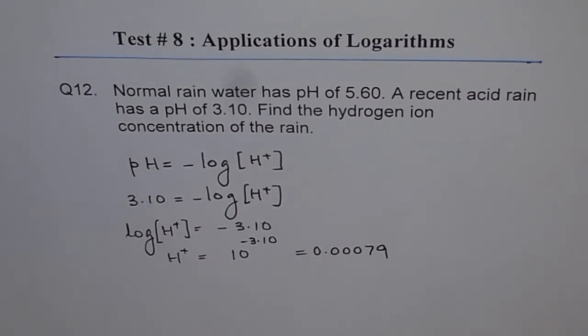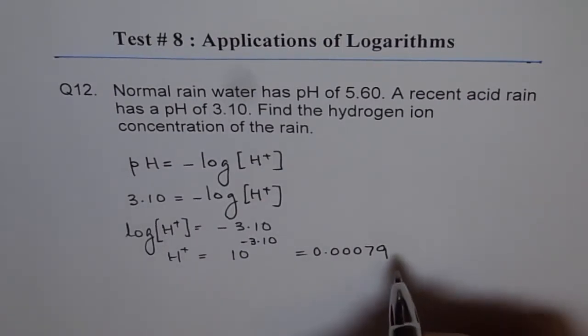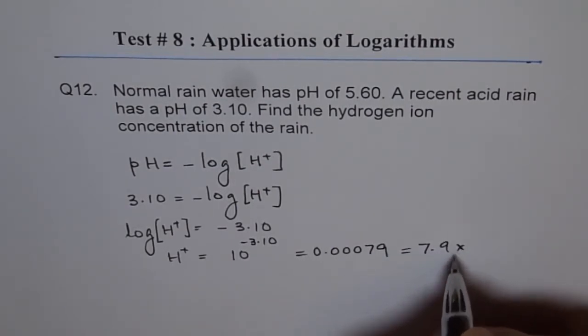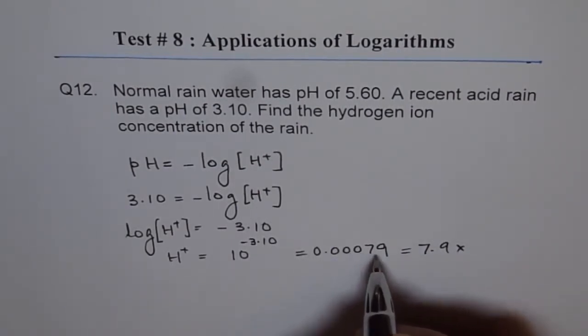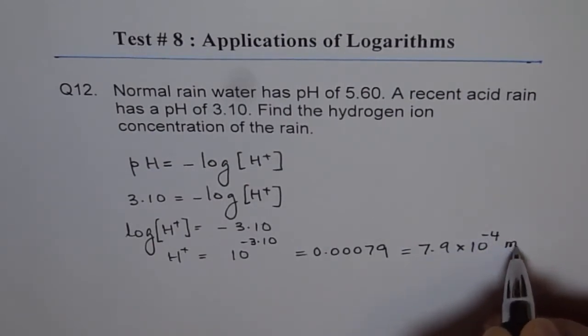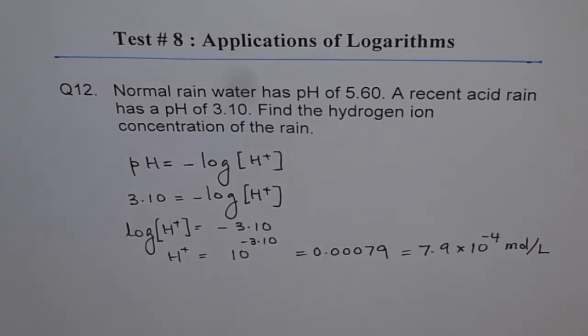That is the hydrogen ion concentration. And we can write this as 7.9 times 10 to the power of minus 4 moles per liter. So, that is the unit for hydrogen ion concentration. That is the answer.